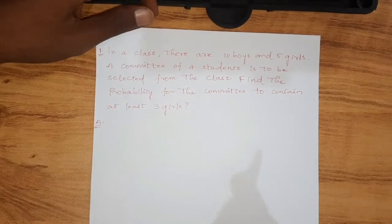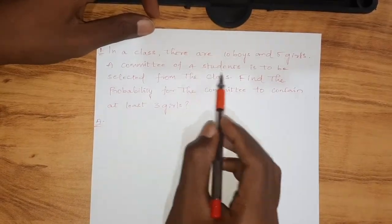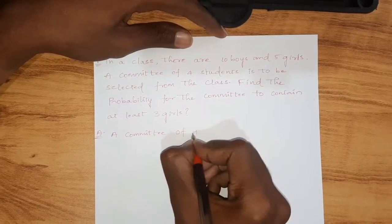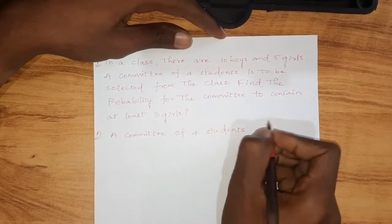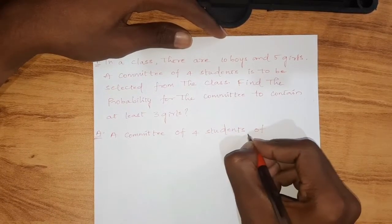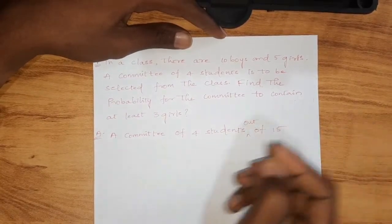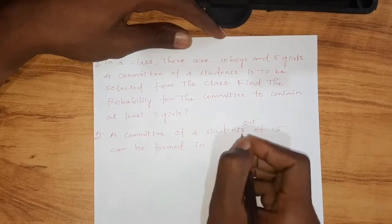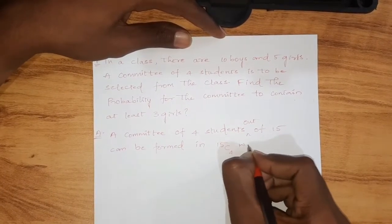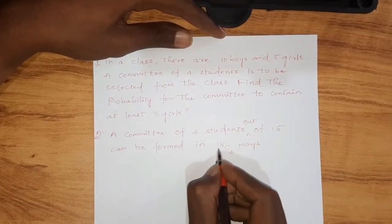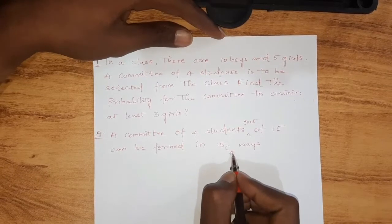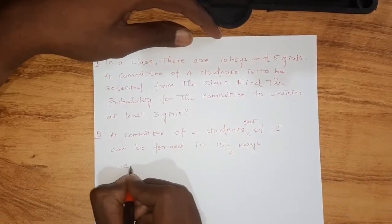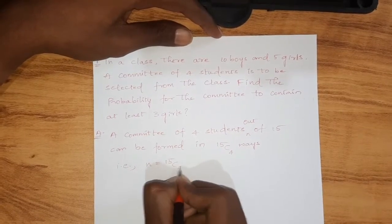A committee of 4 students out of 15 can be formed in 15C4 ways. The total number of students is 15, so we are selecting a group of 4 students from 15. Therefore, n equals 15C4.